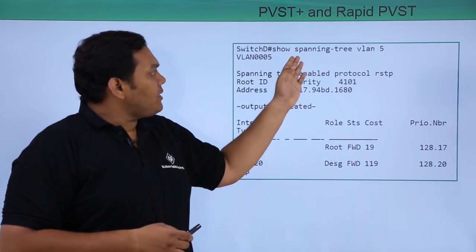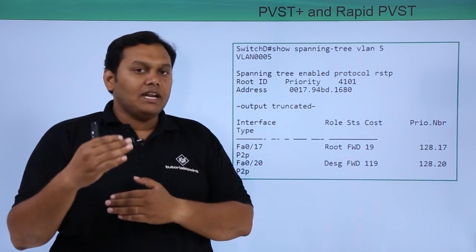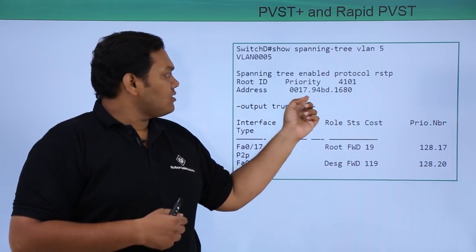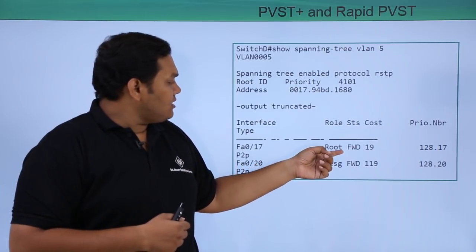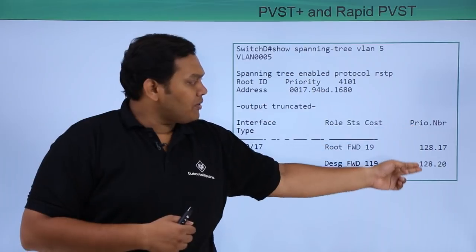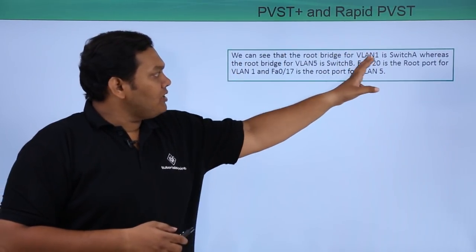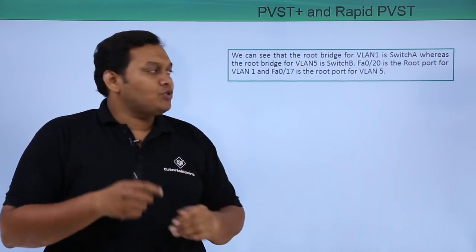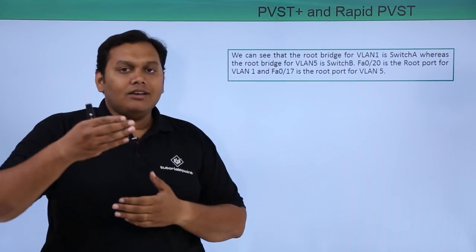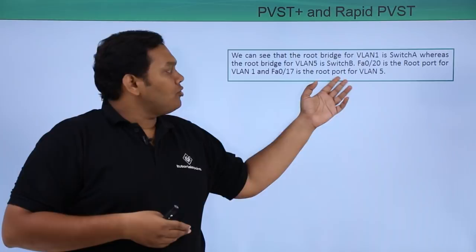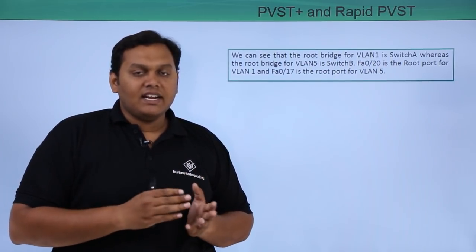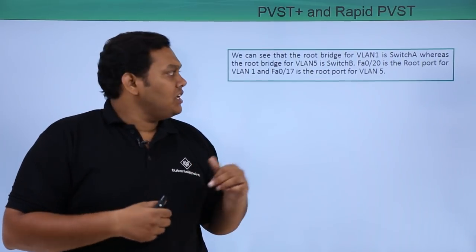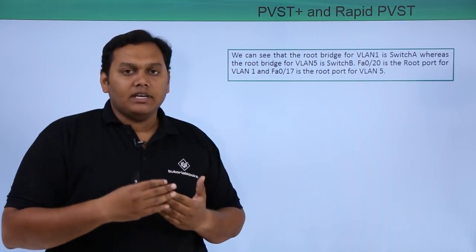On Switch D, running show spanning tree VLAN 5 shows the spanning tree running as RSTP, with the root ID priority and switch address listed. Interfaces 17 and 20 are shown — 17 is a root forwarding port and 20 is a designated forwarding port. From this output, the root bridge for VLAN 1 is Switch A and the root bridge for VLAN 5 is Switch B. Fast Ethernet 20 is the root port for VLAN 1 and Fast Ethernet 17 is the root port for VLAN 5. This concludes the discussion on PVST+ and Rapid PVST.